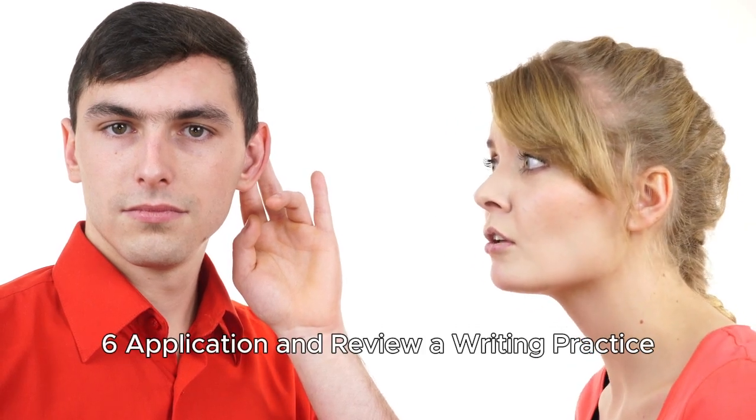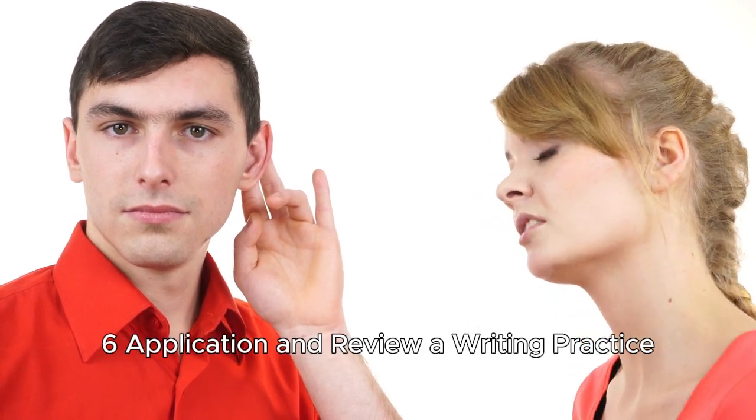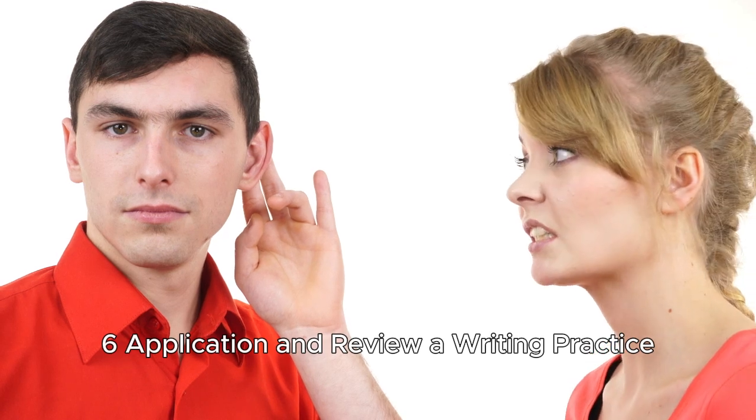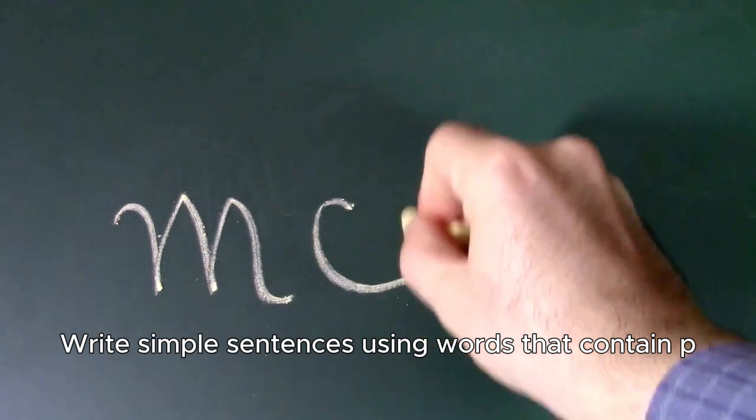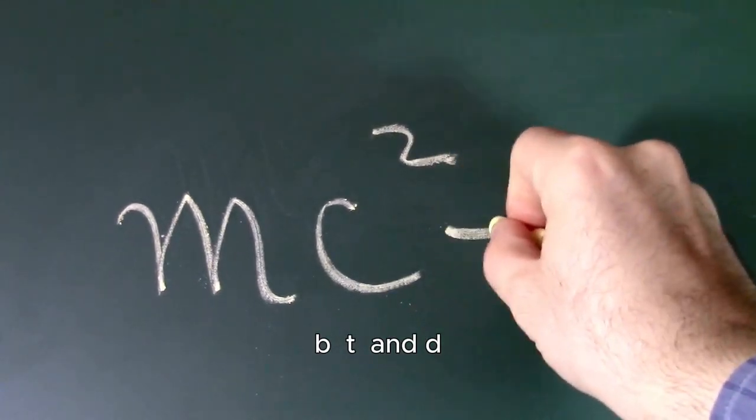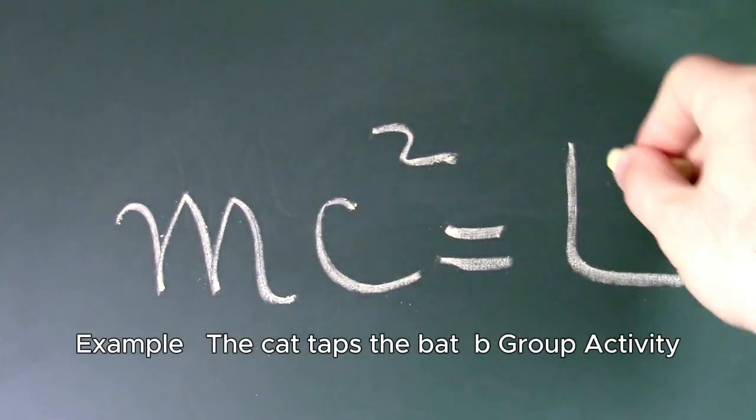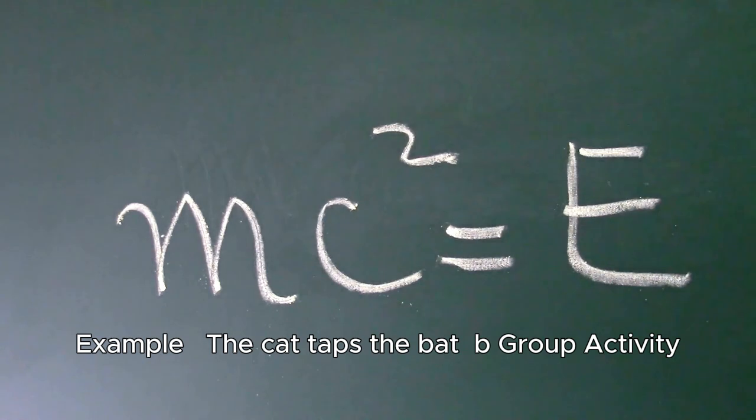Application and review. Writing practice: Write simple sentences using words that contain P, B, T, and D. Example: the cat taps the bat.